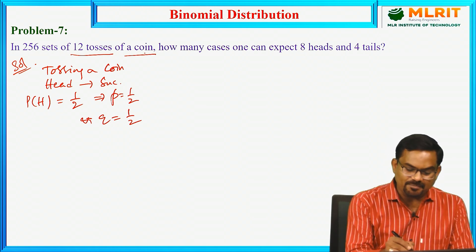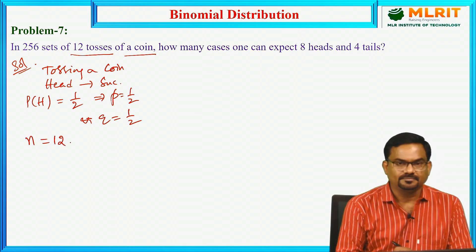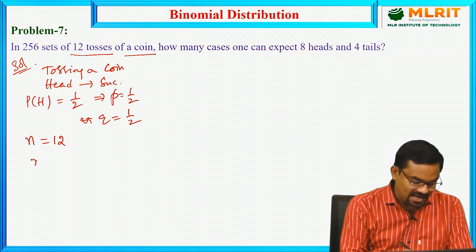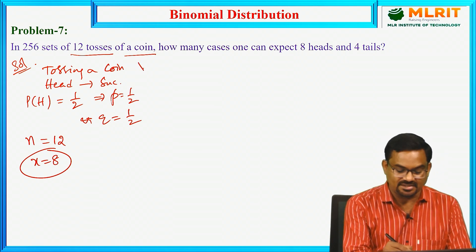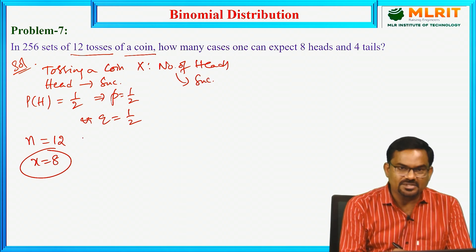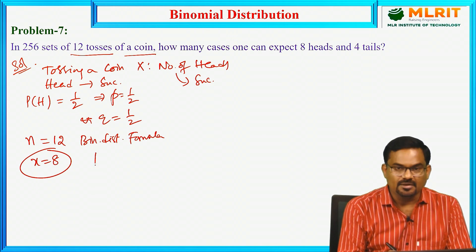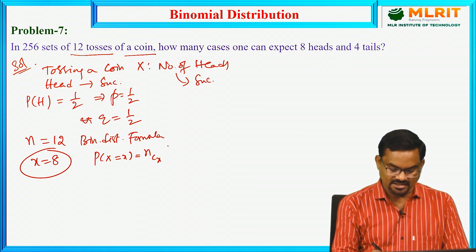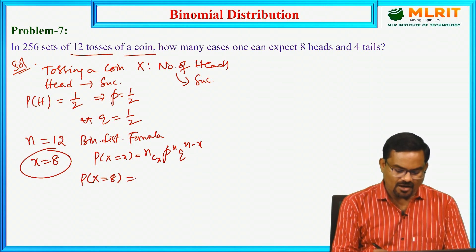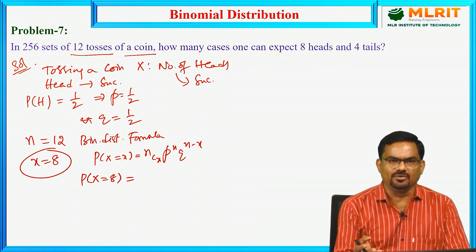The experiment is repeated 12 times — 12 tosses of a coin — so n equals 12. How many cases can one expect 8 heads and 4 tails? That means x equals 8, because x denotes the number of successes, the number of heads. Using binomial distribution, the formula is P(x) = nCx * p^x * q^(n-x). We need to calculate getting 8 heads — out of 12 times, getting 8 means the remaining 4 times we get tails.